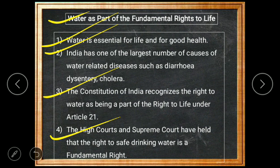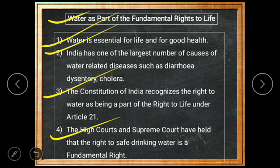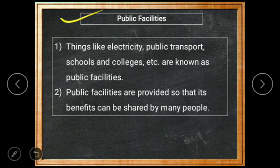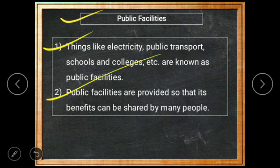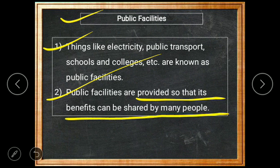The High Courts and Supreme Court have held that the right to safe drinking water is a fundamental right. People have a right to drinking water and it cannot be denied to them — the government must make arrangements for it. Things like electricity, public transport, schools, and colleges are known as public facilities. Public facilities are provided so that their benefits can be shared by many people at once, such as a school serving many students and teachers.